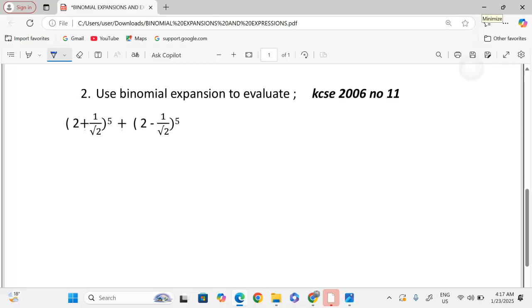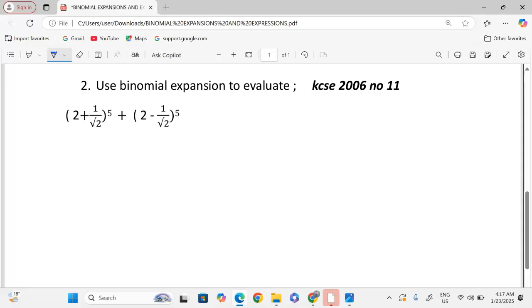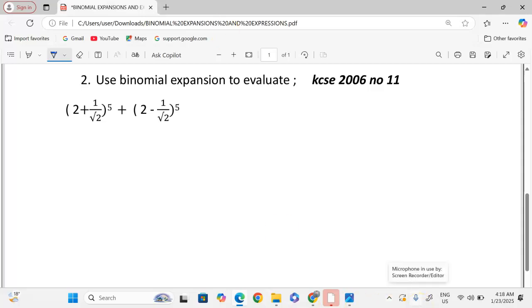Number 2. Use binomial expansions to evaluate. This is from KCSE 2006, number 11 in paper 2: (2 + 1/√2)^5 plus (2 - 1/√2)^5. Let me begin by outlining the coefficients of power 5. That is 1, 5, 10, 10, 5, 1.